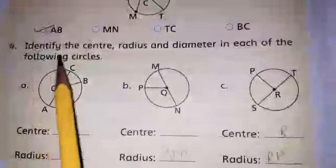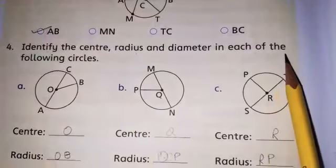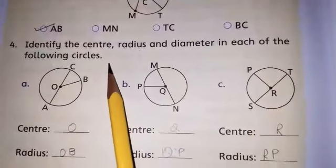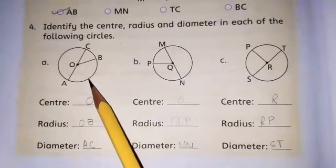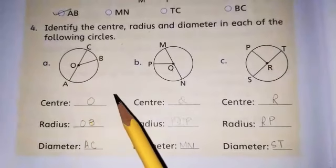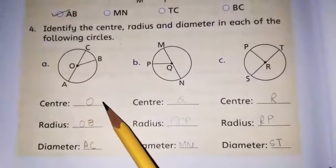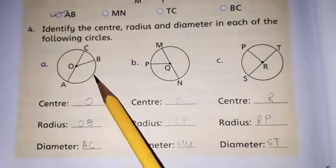Now, question 4: Identify the center, radius and diameter in each of the following circles. In this shape, center is on which point? Yes, center is at O. So write O.